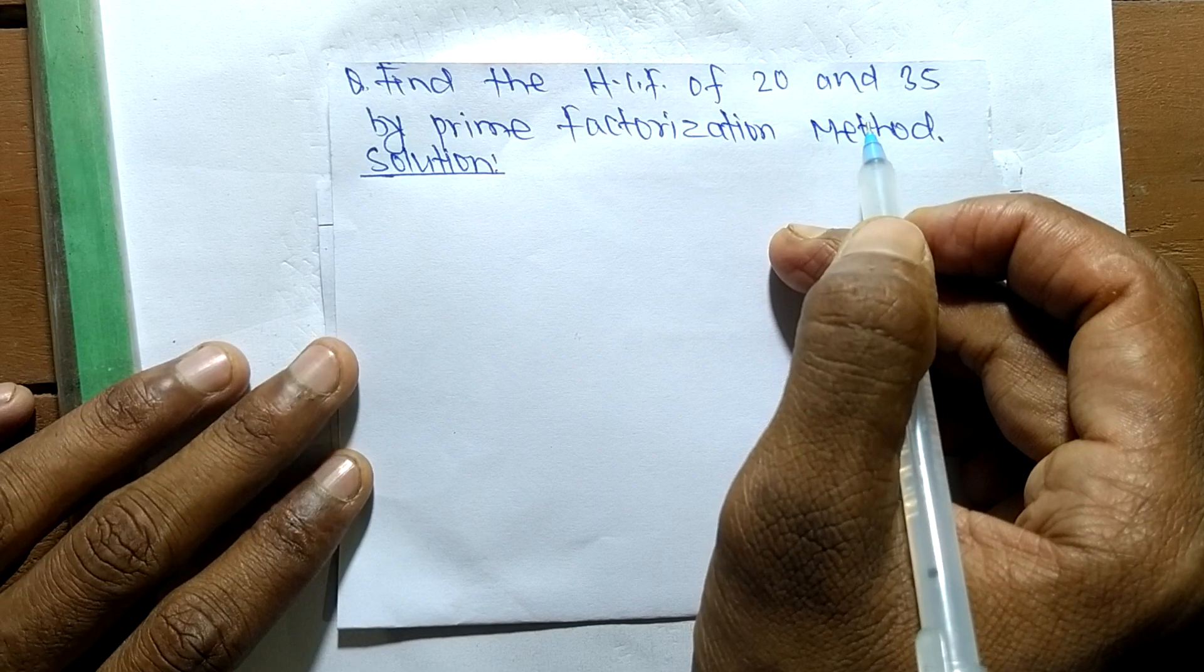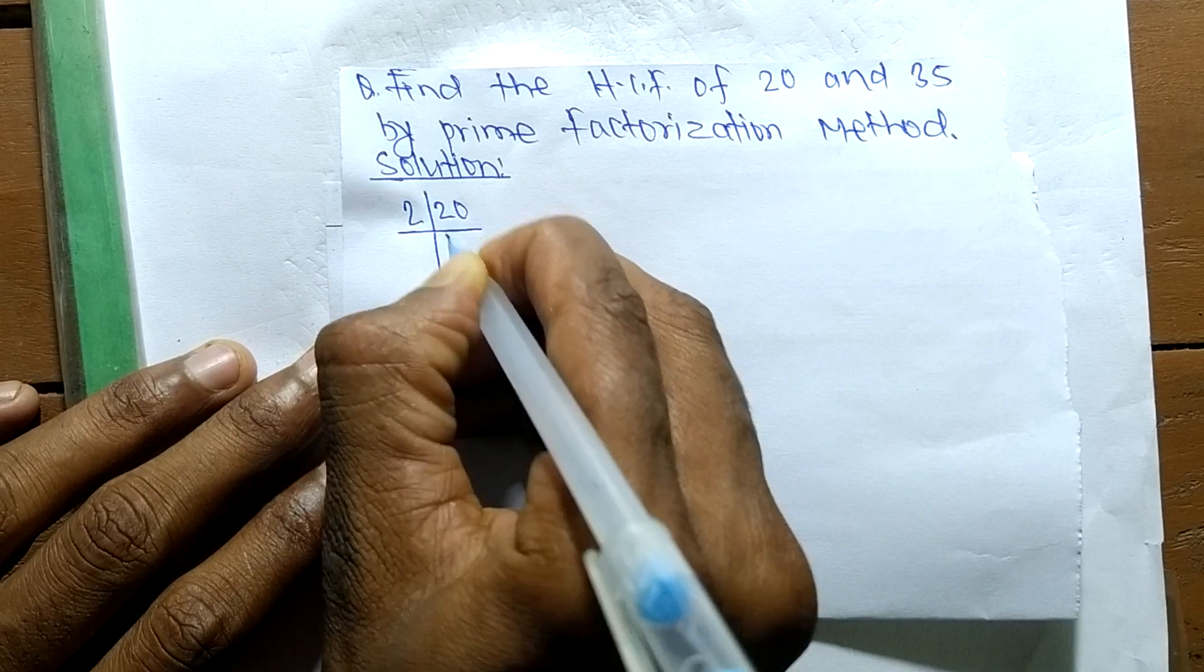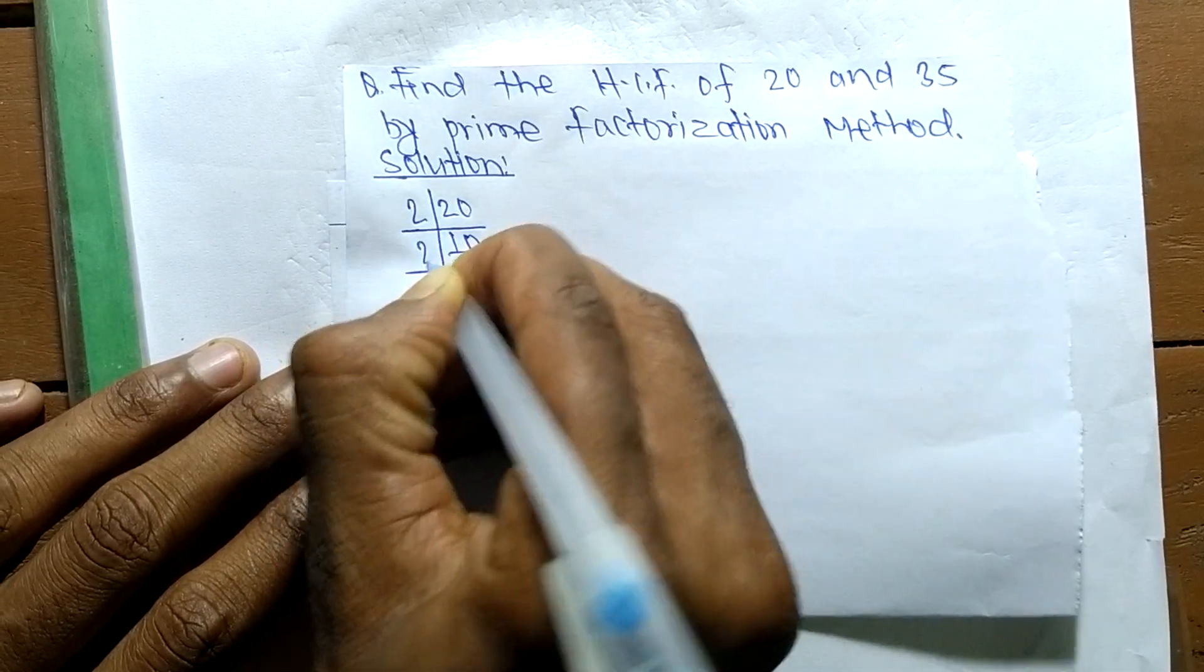First, we find out the prime factors of 20. It is 2 times 10 equals 20, 2 times 5 equals 10...